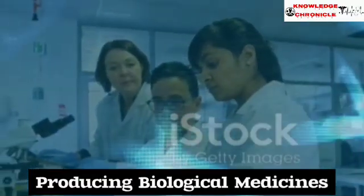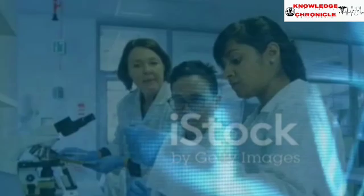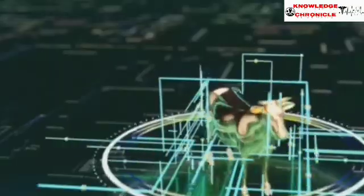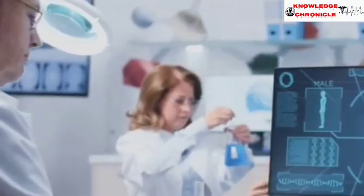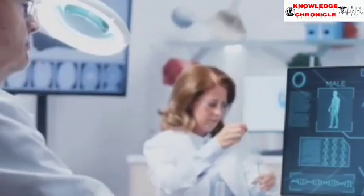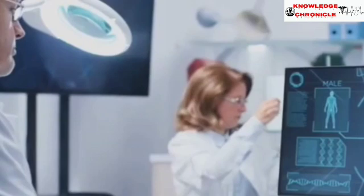Some human diseases require complex biological medicines like proteins or enzymes, which are hard and expensive to produce. That's where transgenic animals come in. By inserting a human gene into a cow, goat, or sheep, scientists can make the animal's milk produce specific human proteins.